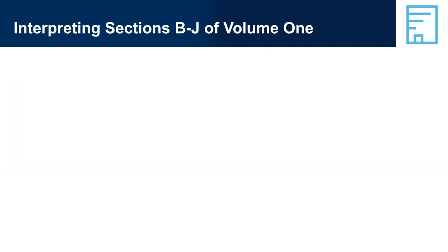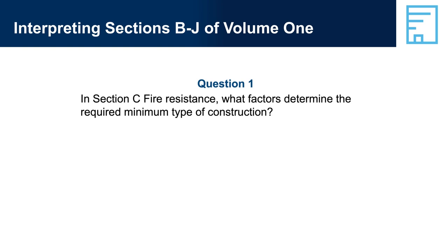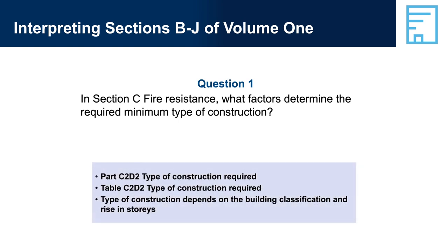Interpreting Sections B to J of Volume 1. Question 1: In Section C, fire resistance, what factors determine the required minimum type of construction? Part C2D2, type of construction required; Table C2D2, type of construction required. Type of construction depends on the building classification and rise in stories.